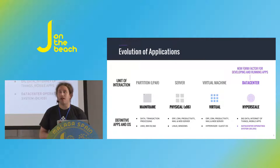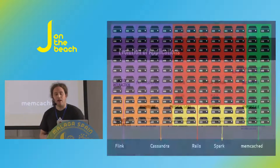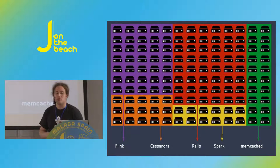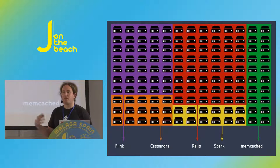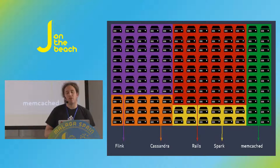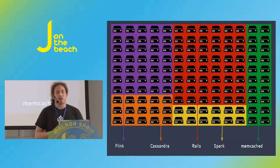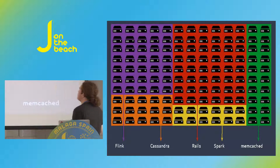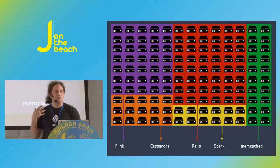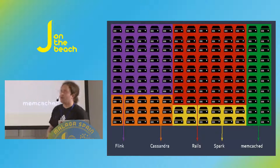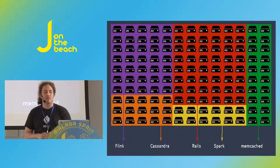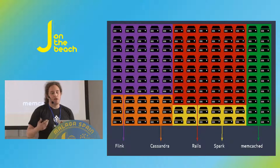For example, how does it still look with many of our customers? They have new applications — Flink for data streaming, Cassandra, some Rails applications as user-facing front-ends, Spark for analytics, maybe some Memcache. But what they're doing right now is splitting up the cluster into physical chunks, assigning a static part of their resources to a Flink cluster, a static part to the Cassandra cluster, and so on.